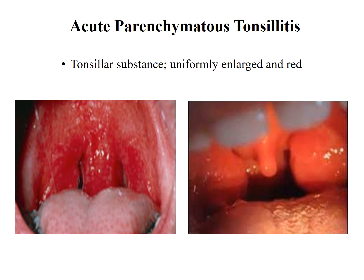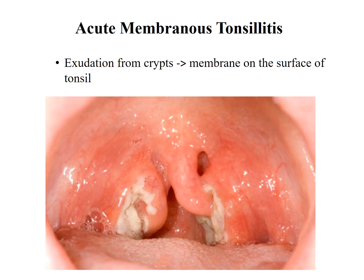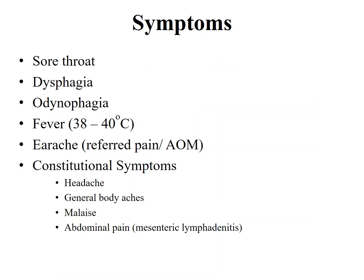In acute parenchymatous tonsillitis, the tonsillar substance is affected and the tonsils are uniformly enlarged and red. In acute follicular tonsillitis, infection spreads into the crypts, which become filled with purulent material, presenting at the opening of the crypts as yellowish spots. Acute membranous tonsillitis is a stage ahead of acute follicular tonsillitis, where exudation from the crypts coalesces to form a membrane on the surface of the tonsils.